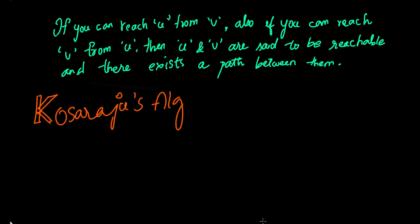The entire Kosaraju's algorithm is based on one fact. It goes like this: If you can reach vertex V from vertex U, and also if you can reach vertex U from vertex V, then U and V are said to be reachable and there exists a path between them.